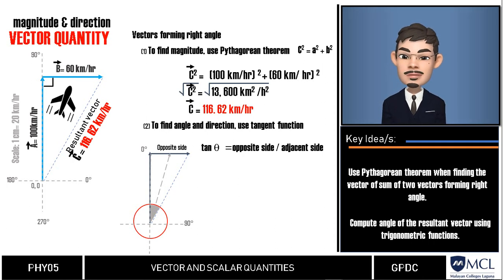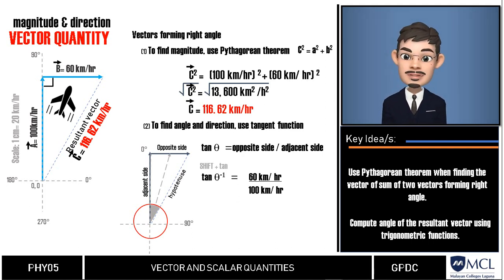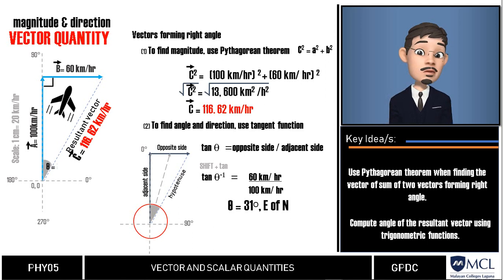Let us perform the operation now. In your calculator, you punch in shift tan, then type in the numbers 60 over 100 and we will get 30.9 or 31 degrees. This means the airplane is traveling at 31 degrees east of north.